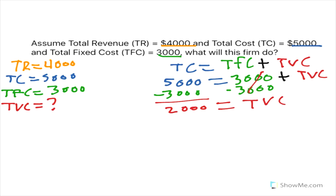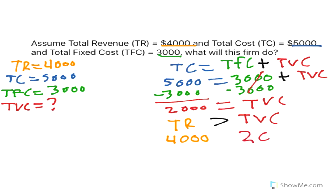We know from the shutdown rule that we have to have our total revenue greater than our total variable cost in order to stay in business in the short run. Our total revenue is $4,000 and our total variable cost is $2,000. Since $4,000 is greater than $2,000, we'll tell this business yes, they're able to stay in business and operate in the short run.